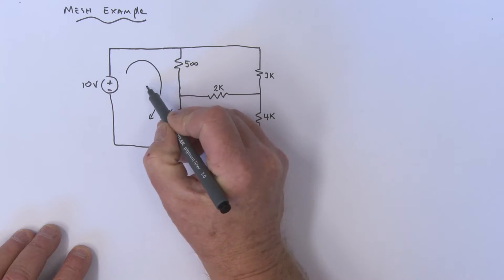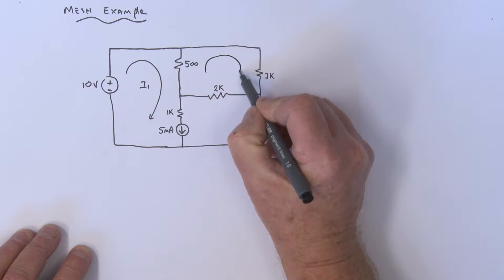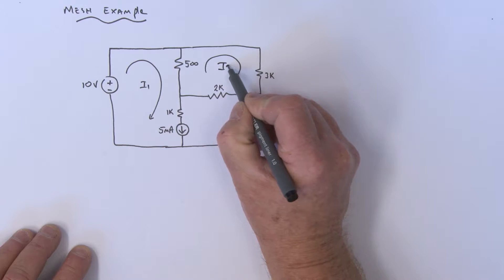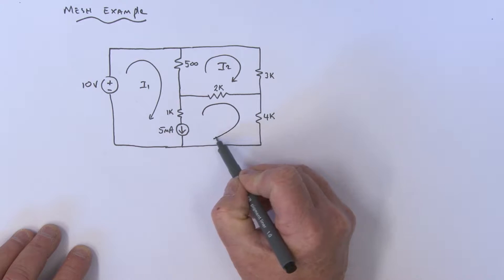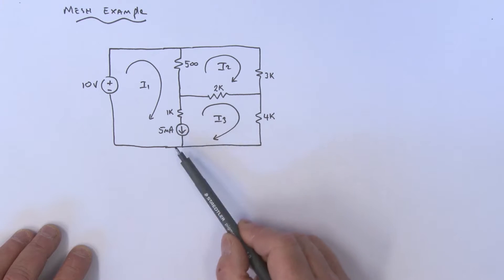We've got an I1 mesh running like so, an I2 mesh current here, and an I3 mesh current over here. Now, how do we do this? Well, the problem...